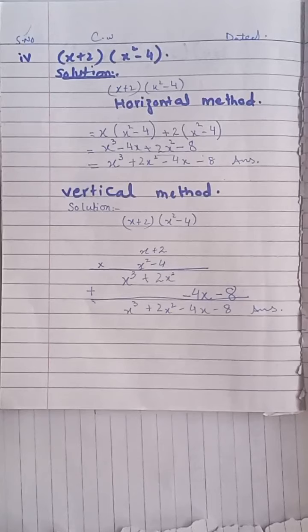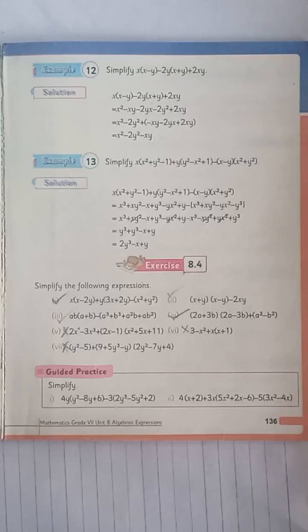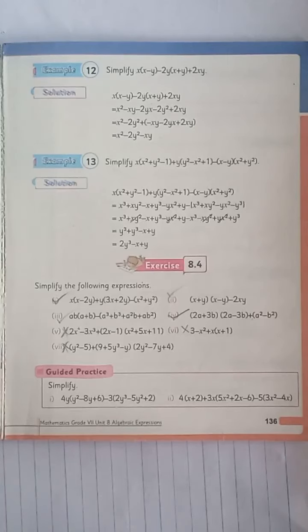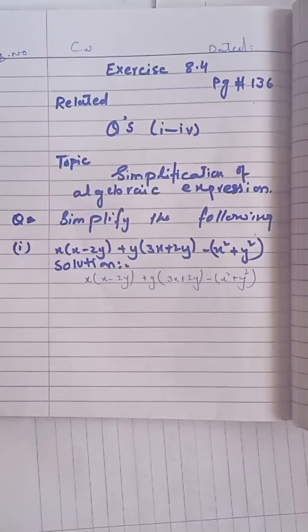Students, part 5 you can do on your own. I have taught you two methods — use whichever you find easier. Now we move to exercise 8.4: simplify the following. This is on book page number 136.